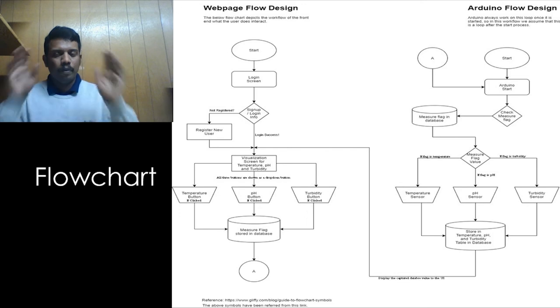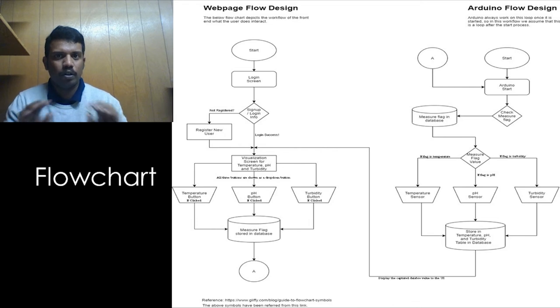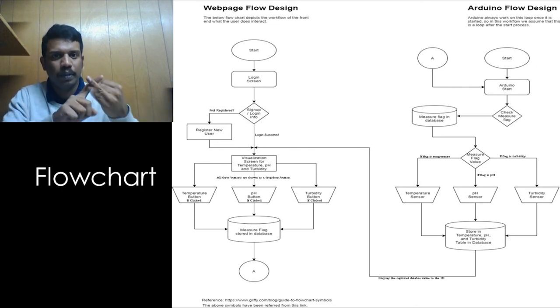So on the web flow design, it starts with the browser. You go to a user browser and then you get to see the login screen. You type in your username and password and click login. You get to see the dashboard where there will be a drop-down option with temperature, pH and turbidity options. And then a measure button. On the right side, you will see a graphical representation.